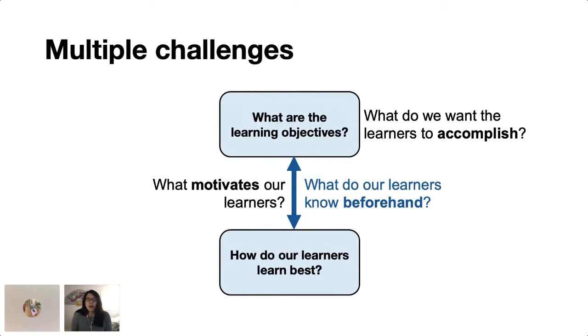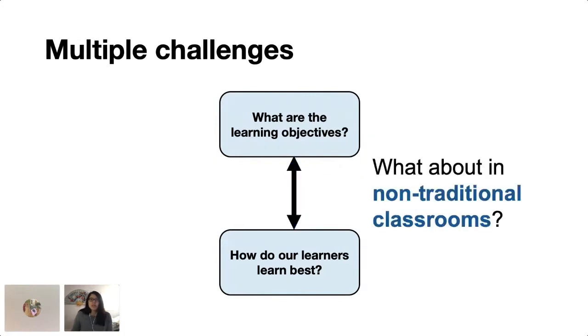Therefore, our goals and what we know about our learners have a bi-directional relationship where these learning objectives and our knowledge of our learners inform each other. And this relationship is present in all learning contexts. So today, I'm going to talk about how this works in the non-traditional classroom where this relationship is so important but sometimes overlooked.